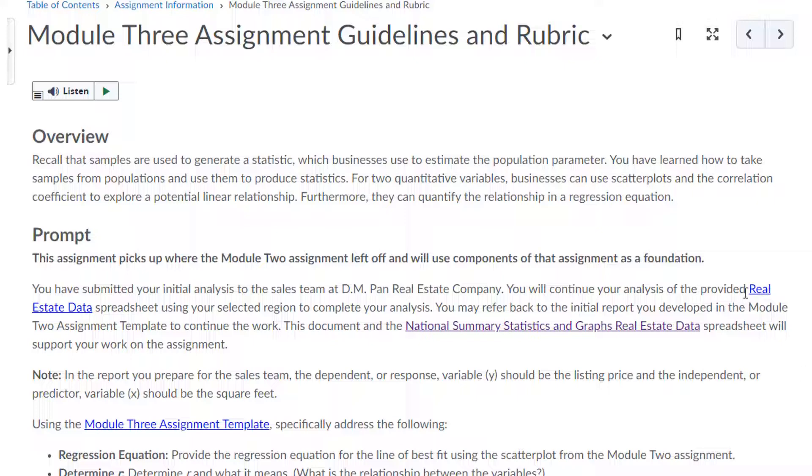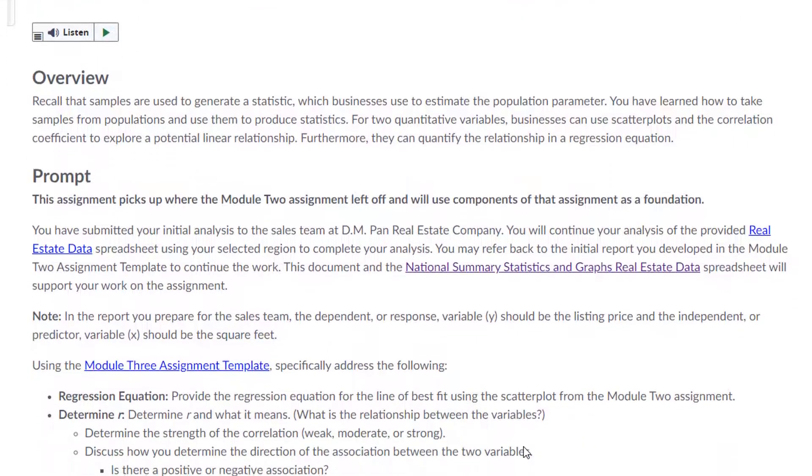So again, you can download the data from here, although you should be using the data that you already have. It's the same random sample of 30 listings from that same one region that you chose and we're going to also be going through this template. So filling out through this template, you want to include your charts that you're asked for and everything in the template.